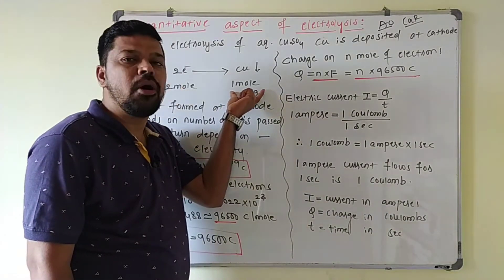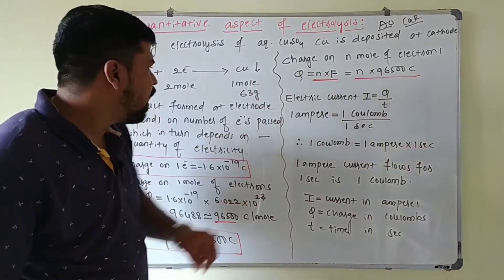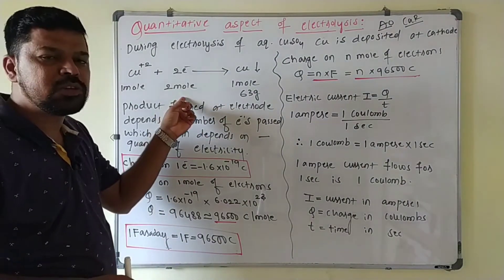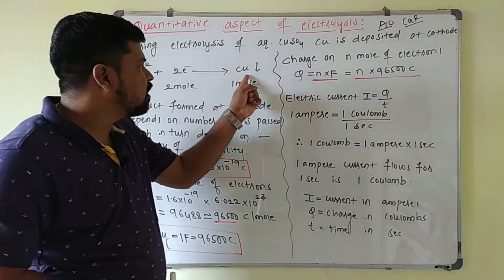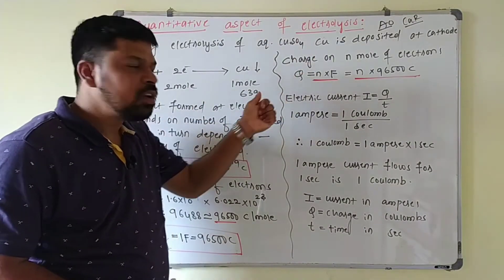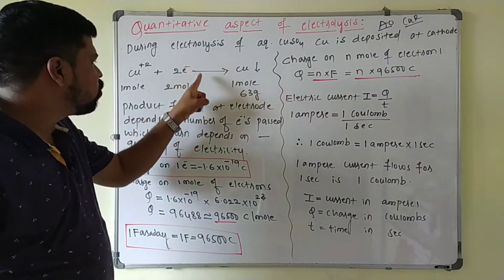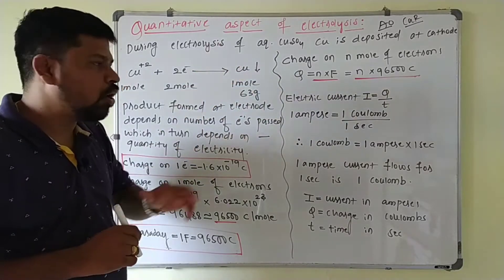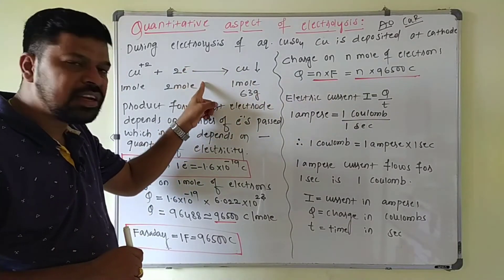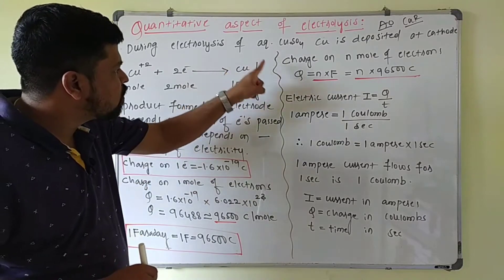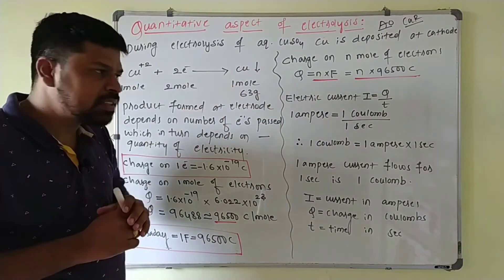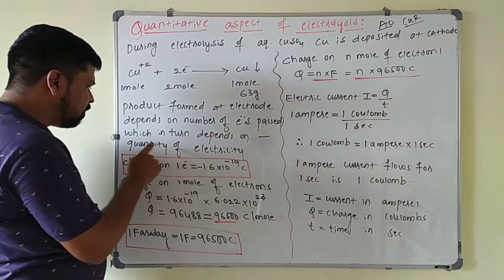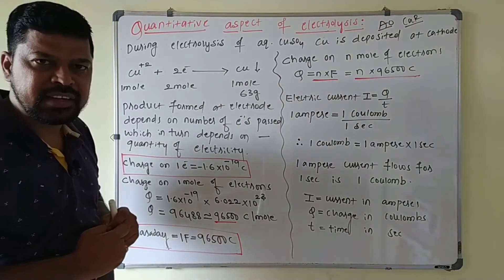In order to produce 63 grams of copper at the cathode, you have to supply two moles of electrons. If the number of electrons is less than two moles, then the copper deposited will be less than 63 grams, because for every one mole of copper deposited, you have to supply two moles of electrons. The product formed at the electrode depends on the number of electrons passed, which in turn depends on the quantity of electricity.